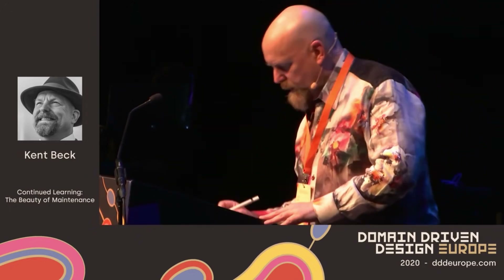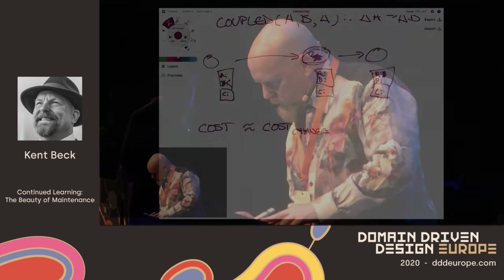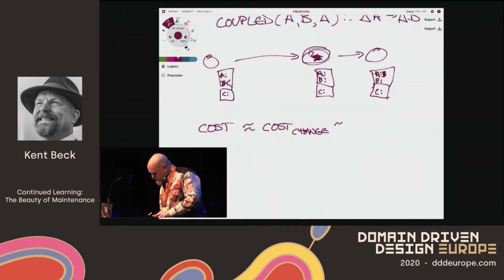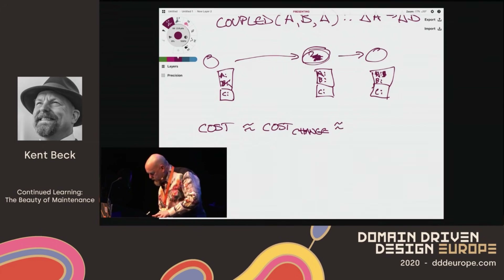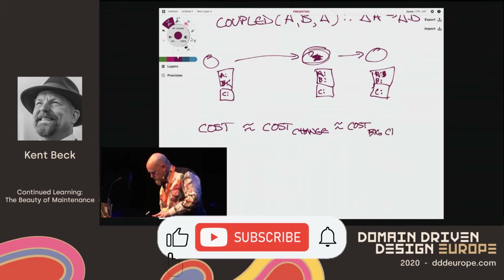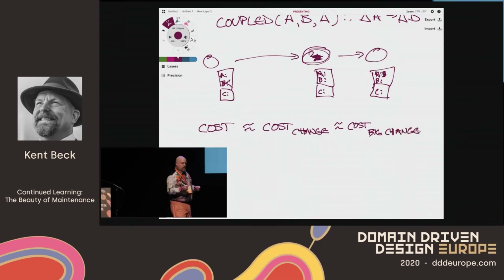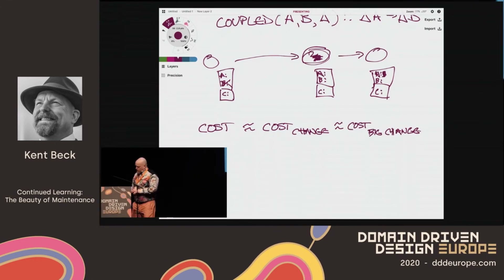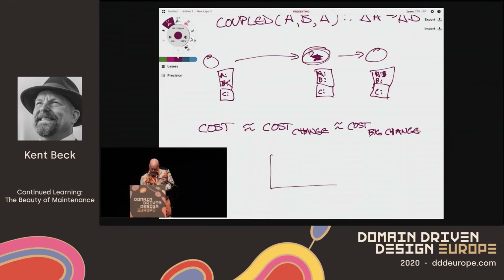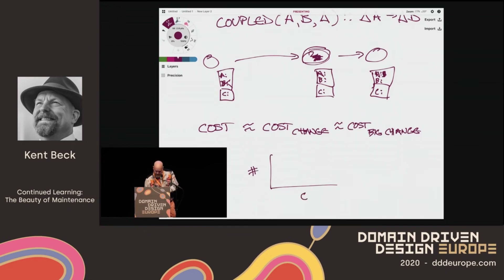But the cost of change — all changes don't cost the same amount. The cost of change is approximately equal to the cost of big changes, and I'll explain why in just a second. If you made a histogram of the cost of changes — this is the count of the number of changes that you make, and this is the cost.